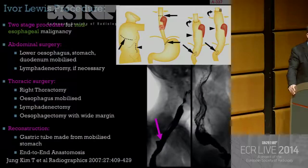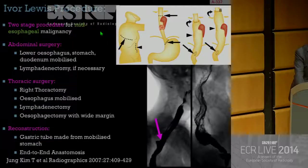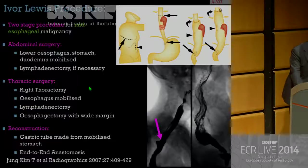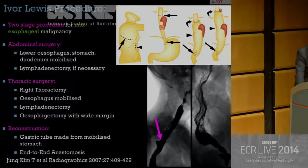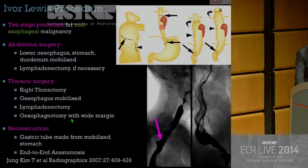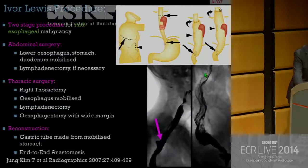The Ivor-Lewis procedure is a common procedure performed for mid-esophageal tumors. It's a two-stage procedure: first a midline laparotomy to mobilize the lower esophagus and stomach, followed by a right thoracotomy where the esophagus is mobilized, lymphadenectomy of the mediastinum is performed, and esophagectomy with a wide margin is done. A gastric tube is made and the anastomosis occurs at the level of the aortic arch. On barium you see the native esophagus, the anastomosis, and the gastric tube — here showing a very nice result without evidence of a leak.